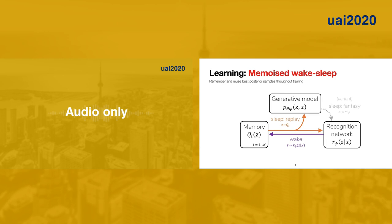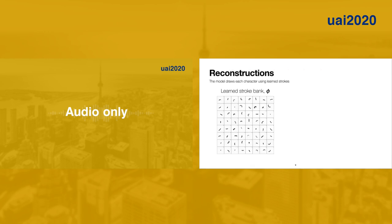Like before, we also have an optional sleep fantasy step that can be interleaved with the other steps. We treat the memory as a variational approximation and show that this parameter update procedure maximizes the evidence lower bound. Going back to our model of handwritten characters, we use memoized wake sleep to fit our model directly from images, including all parameters of the stroke bank.